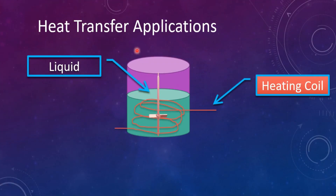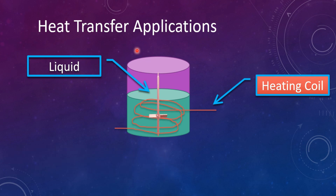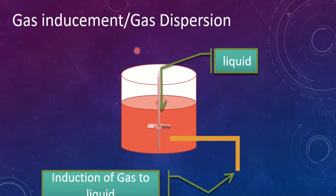The next application is heat transfer. The pitched blade turbine can be used to distribute heat from a hot coil or hot reservoir to a cold solution or any cold contents. The next application is gas inducement and gas dispersion. Using the PBT, we can disperse or induce gas into the liquid.